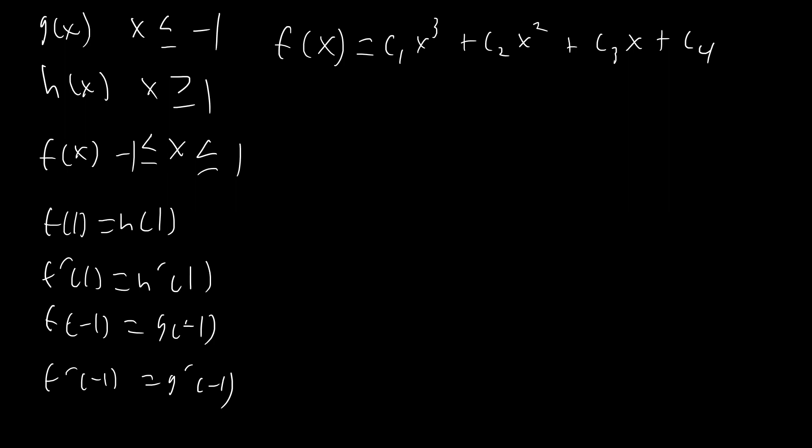If we wanted to make our function a better fit — for example, if we wanted f double prime of one to equal h double prime of one, and f double prime of negative one to equal g double prime of negative one — that would make f of x even smoother. All we have to do is add two more constants, so we'd get f of x equals c1 x to the fifth plus c2 x to the fourth, all the way down to c6. Every time we want to add another layer of derivative matching, we can add two more powers of x. In this video, I'm just going to match the first derivatives. So f prime of x equals 3 c1 x squared plus 2 c2 x plus c3.